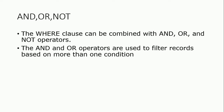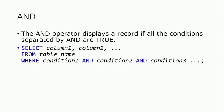The AND operator is used to filter records based on more than one condition. Where we have AND and other operators, the AND operator displays a record only if all the conditions separated by AND are true.